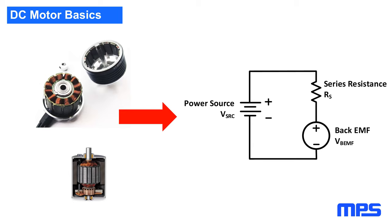Before we dive into stresses and faults, a brief review of how a DC motor works is in order. At its simplest, we can electrically model a DC motor as a voltage called the back EMF in series with a resistor. The back EMF is a voltage generated by the motor that's proportional to the motor speed, which is caused by the windings cutting through the fixed magnetic field of the permanent magnets in the stator. That series resistance is simply the DC resistance of the winding. This model doesn't include commutation — whether mechanical as in a brush motor, or electronic as in a brushless motor — and applies equally to both.